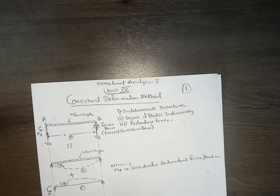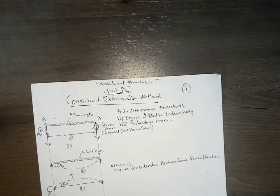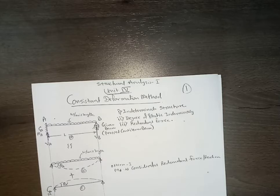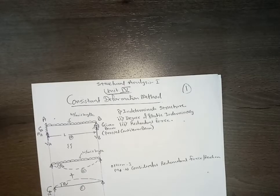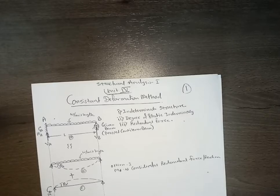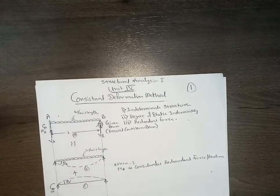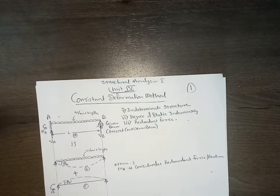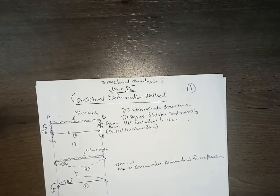For beams, they are generally internally determinate, meaning if you know the reactions you can easily plot the shear force and bending moment diagram. The only unknowns for beams are the reactions. In contrast, for trusses they can be internally indeterminate — if you have extra members you may not be able to calculate internal forces using equilibrium conditions alone. But beams are always internally determinate.